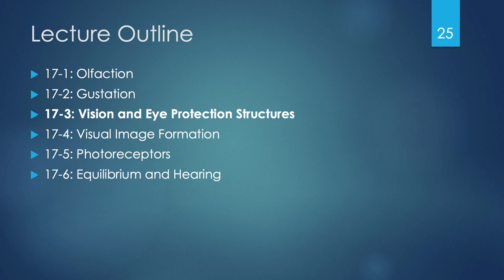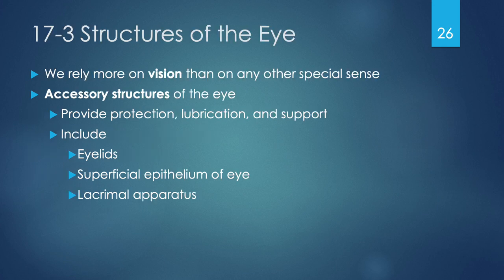Now let's look at section 17.3, vision and eye protection structures. Vision is the one special sense that we rely on more than anything else. Before we discuss vision and how we detect light and create detailed visual images, let's discuss some of the accessory structures of the eye. These accessory structures — including our eyelids, the superficial epithelium of the eye, and the lacrimal apparatus — provide protection, lubrication, and support for the eye.